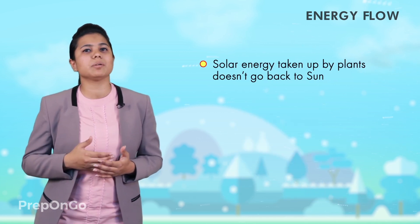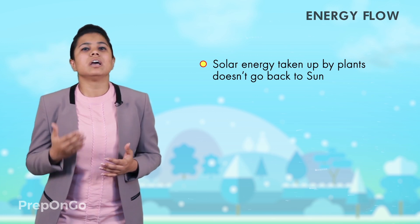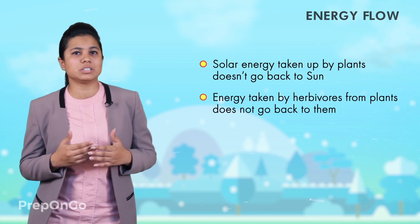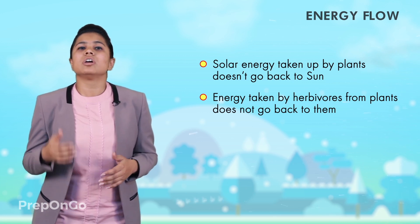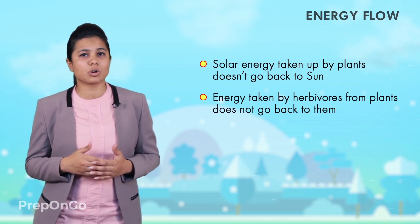For example, the solar energy taken up by the plants does not go back to the sun. Similarly, when the herbivores take energy from the plants, it does not go back to the plants. So in this video, we have seen what trophic levels are and how energy flows between them. In the next video, we are going to see the food web and biological magnification.